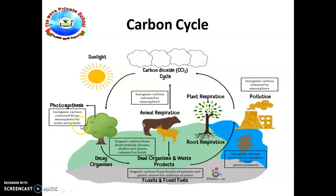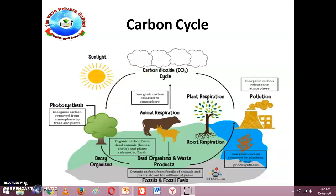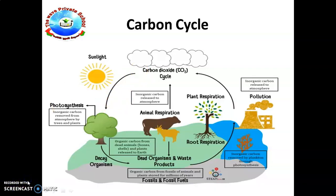In the process of photosynthesis, inorganic carbon is removed from the atmosphere by trees and plants — we know that trees take in carbon dioxide. When photosynthesis takes place, carbon atoms are incorporated into glucose molecules in the plant. When respiration occurs, that carbon dioxide is released back into the atmosphere.